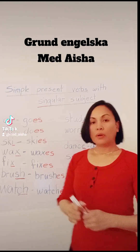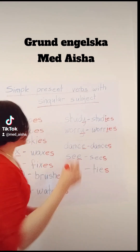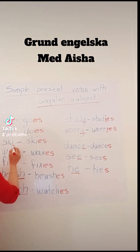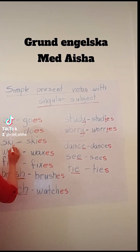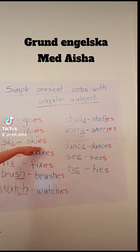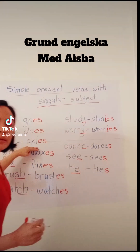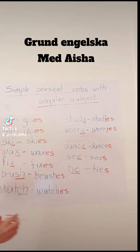Next rule is, if your verb ends with E or I like this, just add ES. SKI becomes SKIES.